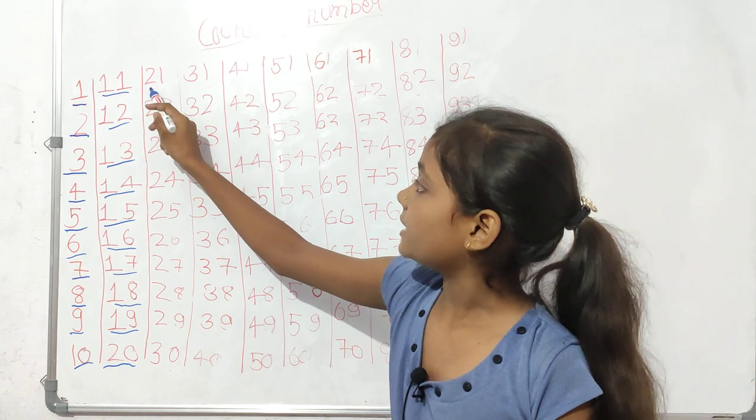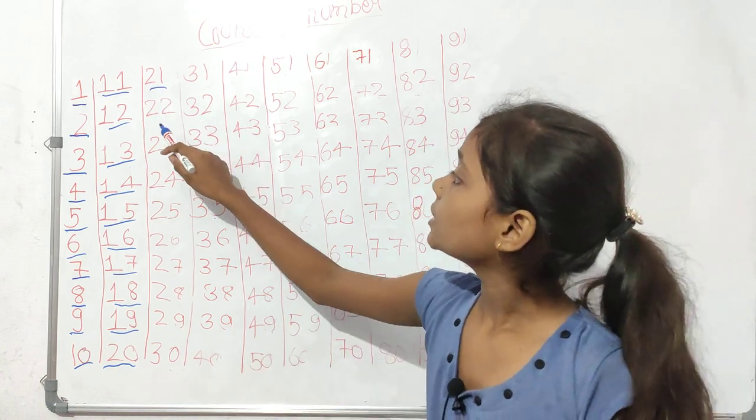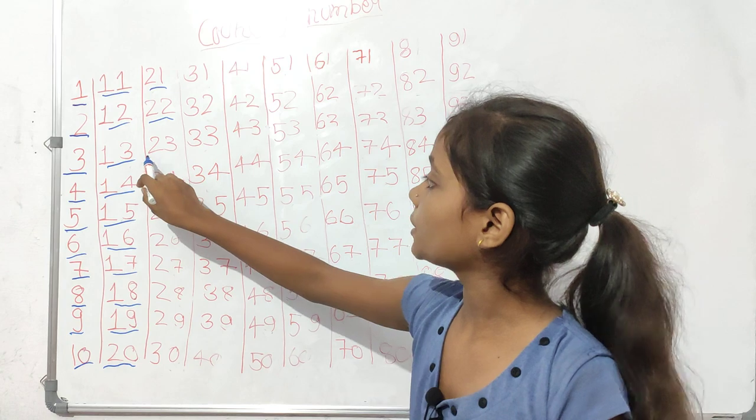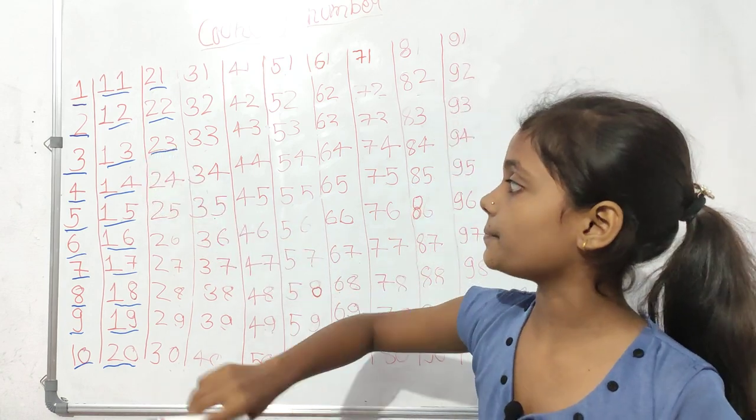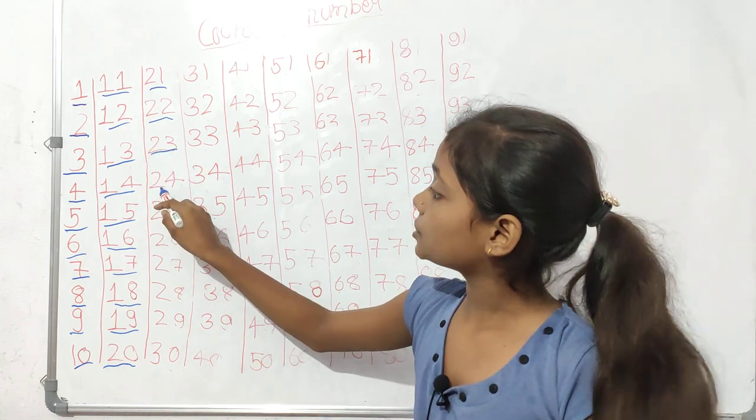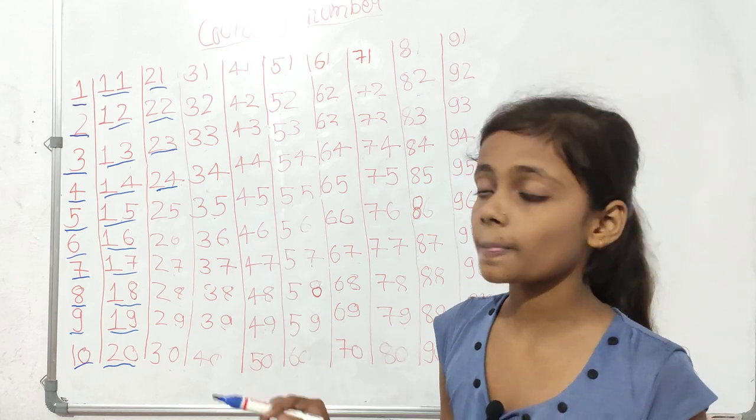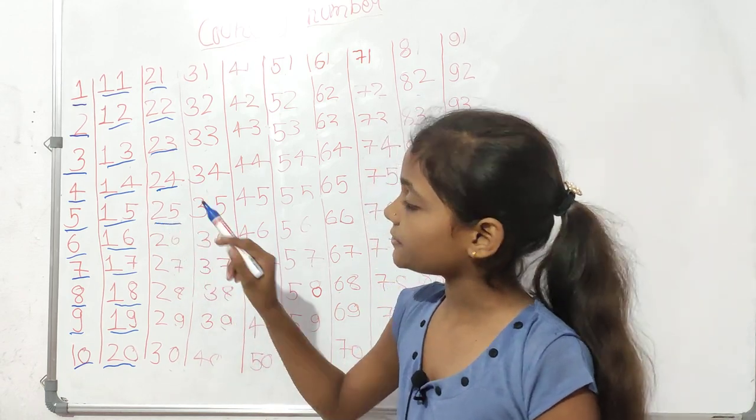Twenty, twenty-one, twenty-two, twenty-three, twenty-four, twenty-five.